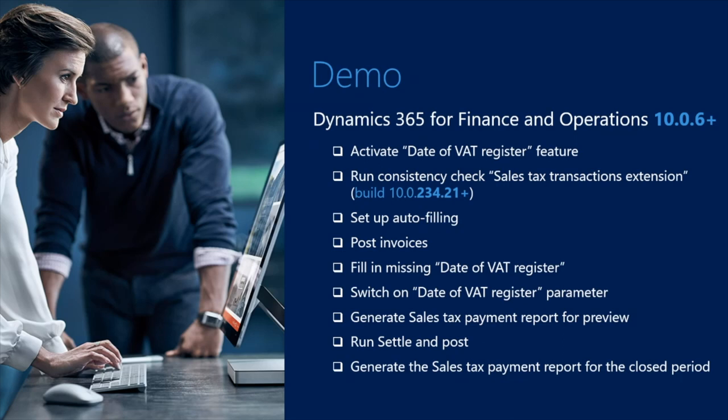For version 10.06, the build number should be 10.0.234.21 or later, as shown here on the slide. I will explain a little bit later why this build should be under control. During the demo, we will learn how to activate the Date of VAT Register feature in the Feature Management workspace and run a consistency check to update the existing transactions in the database.